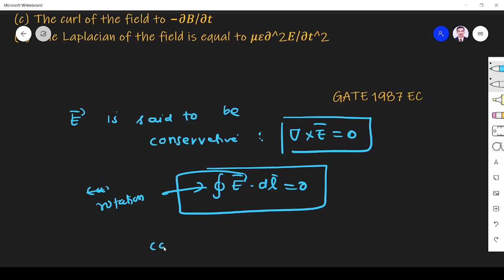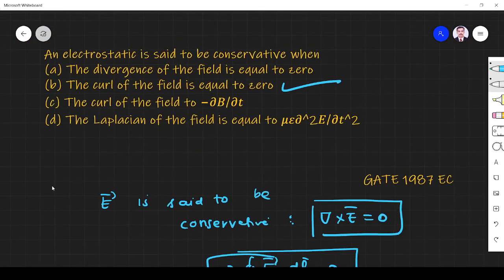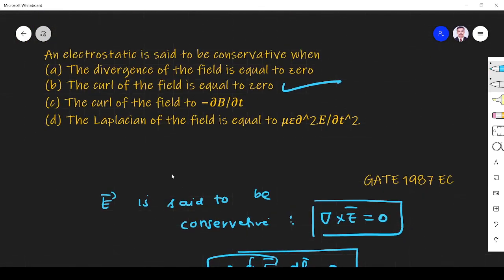So what is conservative? When the value is independent of the path, that is called conservative. If the field has that characteristic, it's called a conservative field. So option B is the right answer for this question. Thank you.